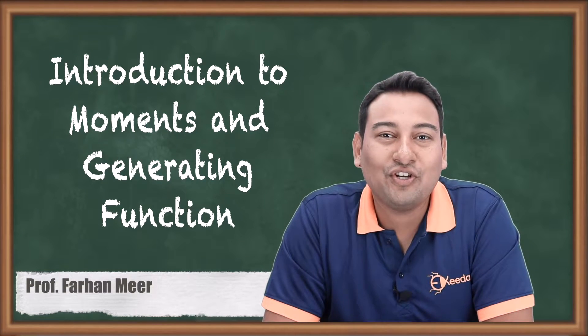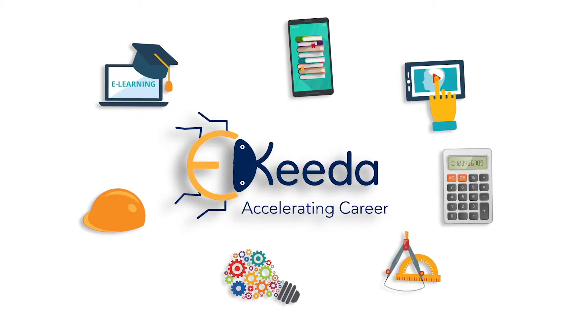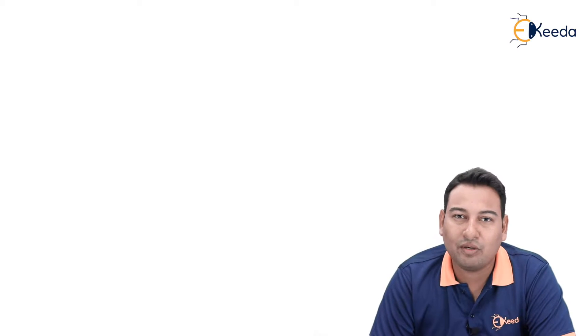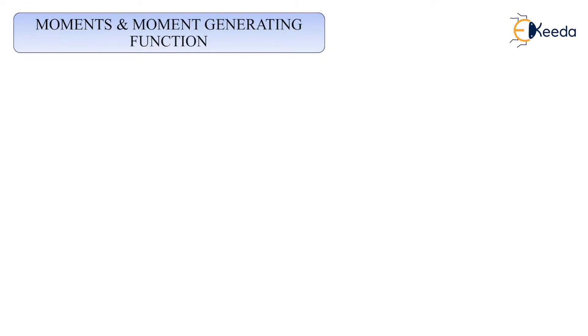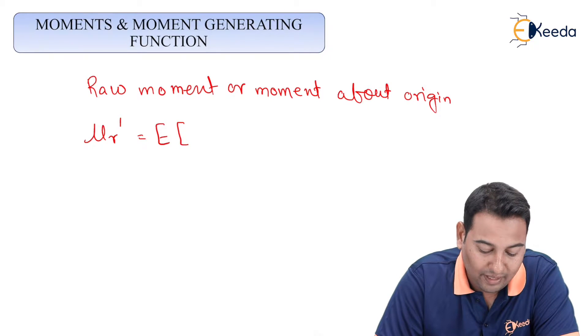In this video we'll be discussing introduction to moments and moment generating function. In probability distribution we're starting with a new topic — moments and moment generating function. This topic is very small and has few problems. Before going ahead, let's discuss the formulas required. The first is raw moment, or moment about origin. It is given by mu r dash and the formula is expectation of x raised to r.